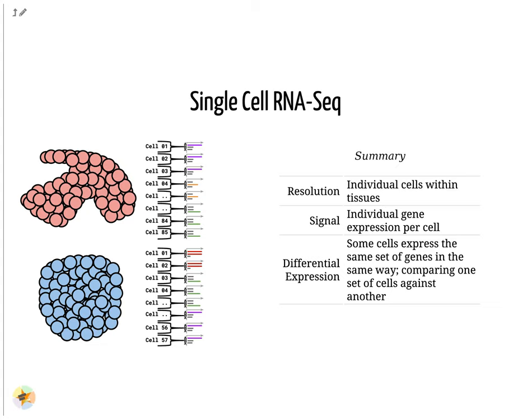Sometimes we need to compare single-cell datasets across tissues, and we see that many cells across tissues share the same cell type. For example, look at the purple and green gene profiles which are shared across both tissues.